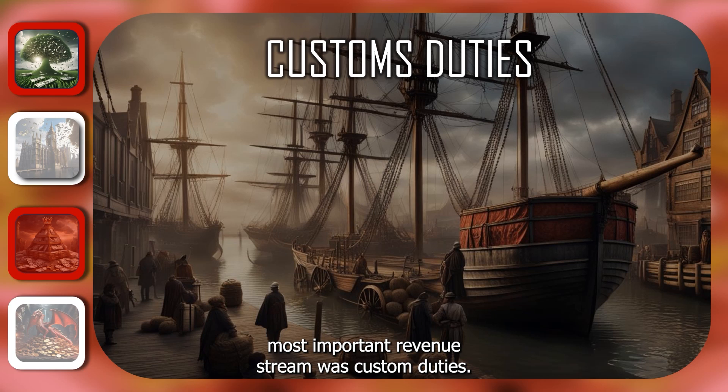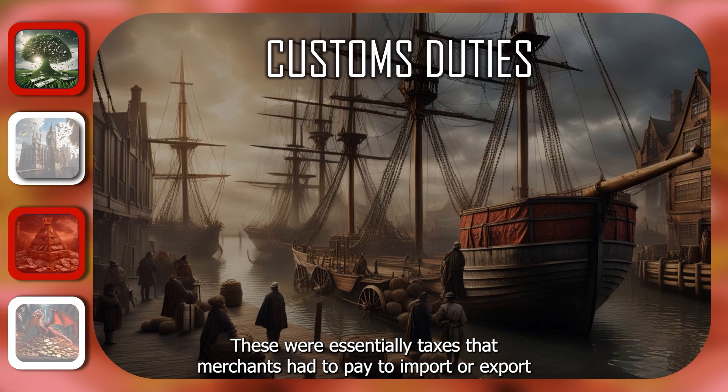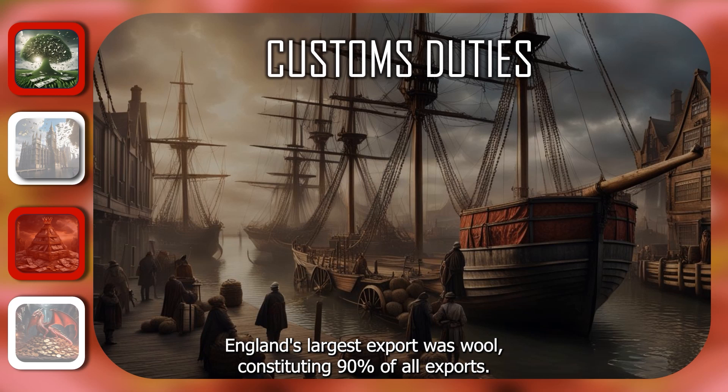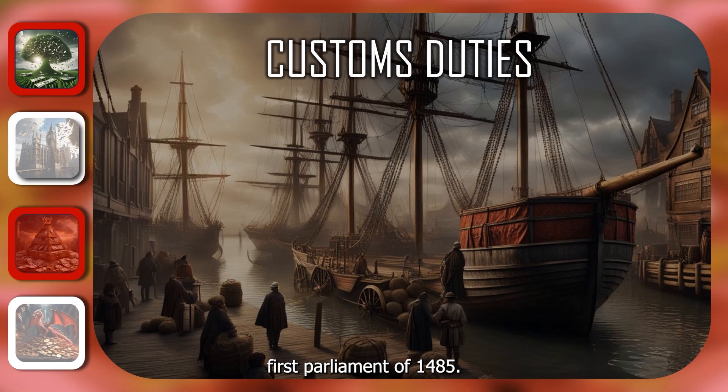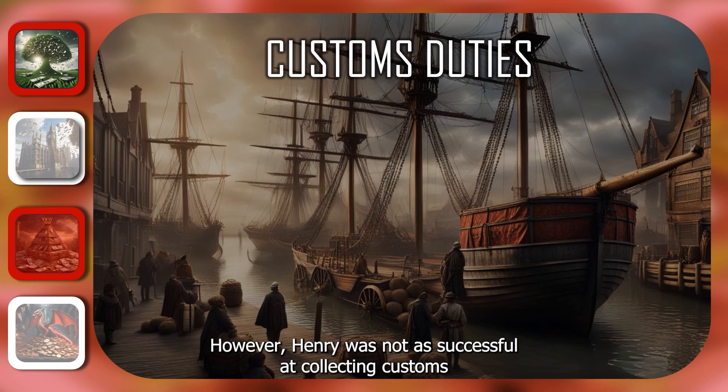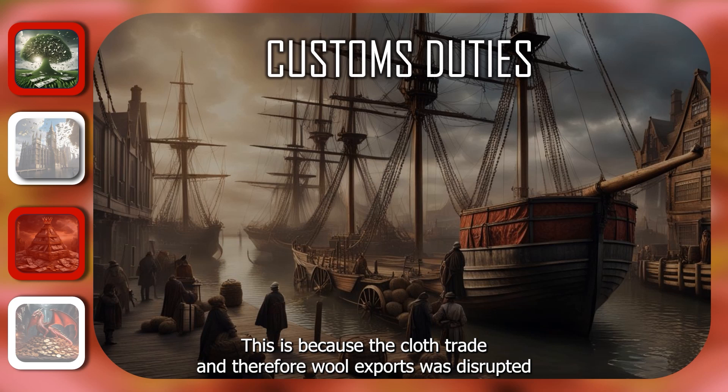The second most important revenue stream was customs duties. These were essentially taxes that merchants had to pay to import or export goods. England's largest export was wool, constituting 90% of all exports. The right to collect customs duties was known as tonnage and poundage, and the king's right to collect this was granted for life in Henry's first parliament of 1485. However, Henry was not as successful at collecting customs duties as he was in raising finance through other means.